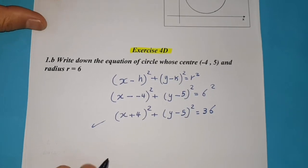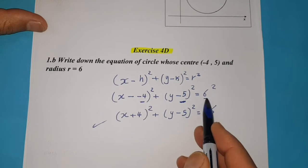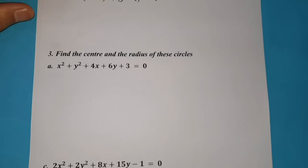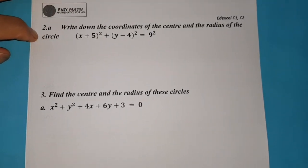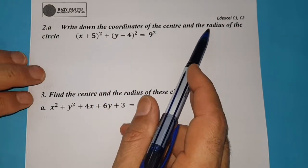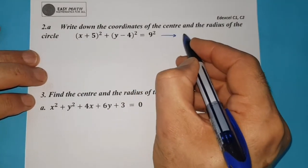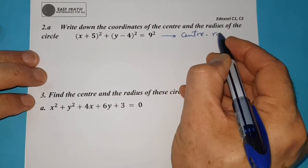Only drop the center into h and k and substitute for r. Continuing with some more questions — this is the number of the question in Exercise 4D. Write down the coordinate of the center and radius of a circle. This equation, in this form, is called the center-radius form.